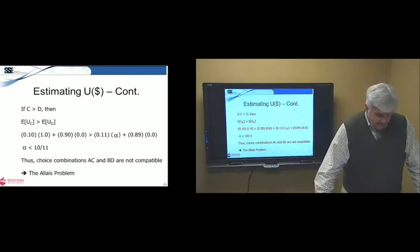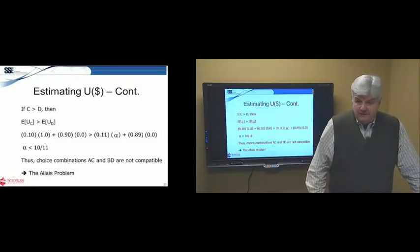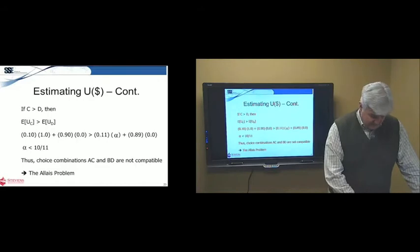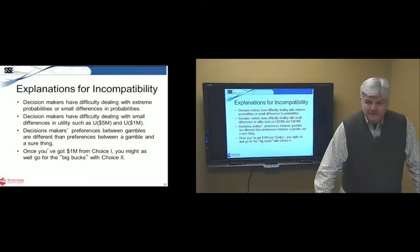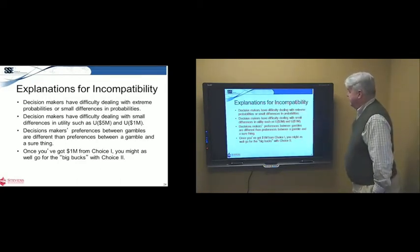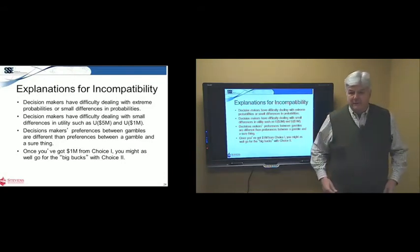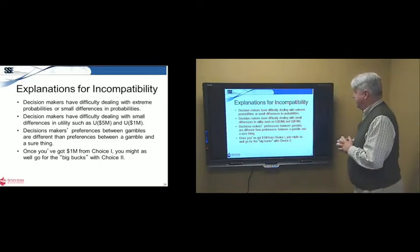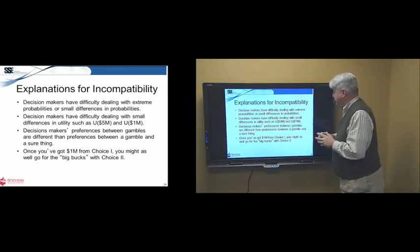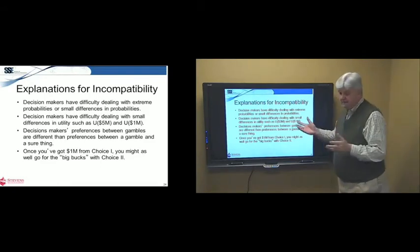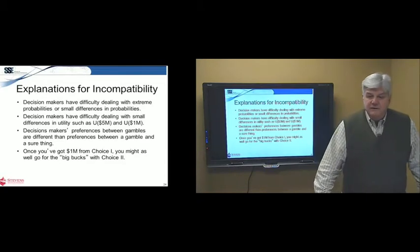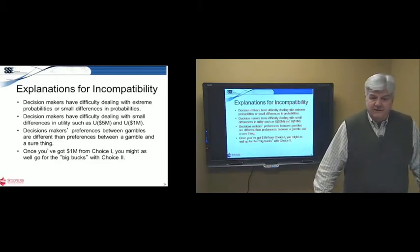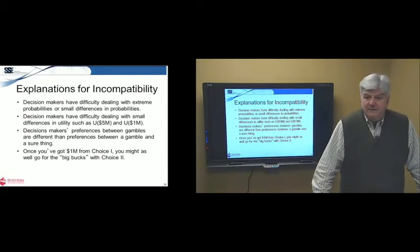Now, the question is, you may not feel that you are being irrational. And many classes I've taught this to have commented on this. So, let me summarize some of their comments. Why do people make these incompatible decisions? Well, one reason is decision-makers have difficulty dealing with extreme probabilities of small differences. When you think of probability 0.9 versus a probability 0.89, does that really seem all that much different? Decision-makers have difficulty dealing with small differences in utility, such as utility of 5 million, utility of 1 million.